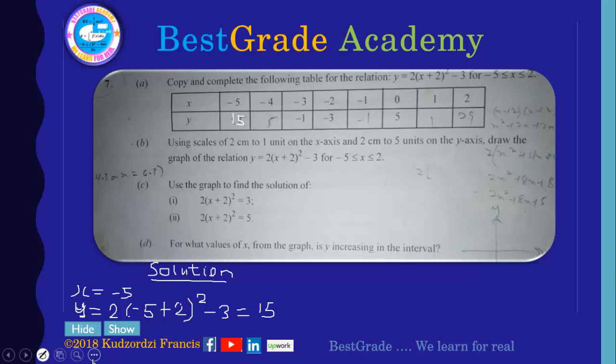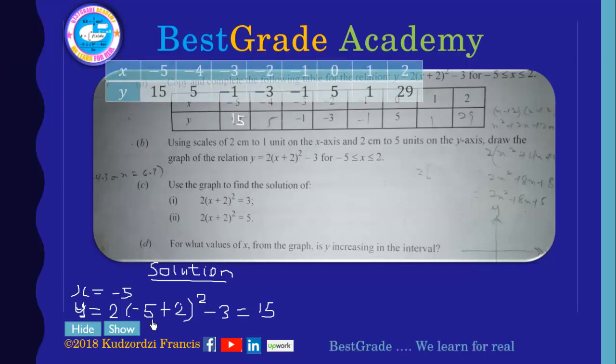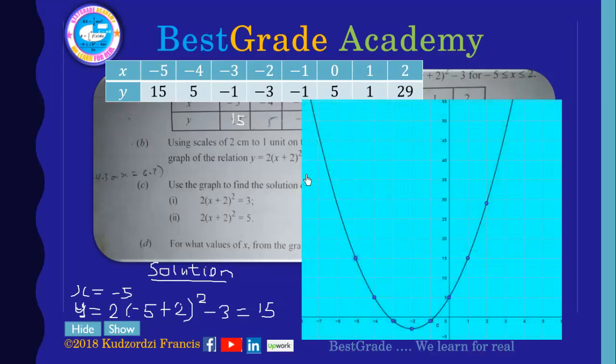Then you can use the process to fill in the rest, showing at least two is okay. Now the complete table will look like this. So the next thing to do is to plot this using the giving scales. So if you plot all the points and draw the curve you get your curve running from this to this. So that is the a part and the b part of the question.